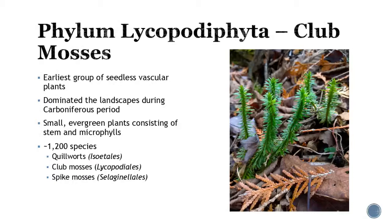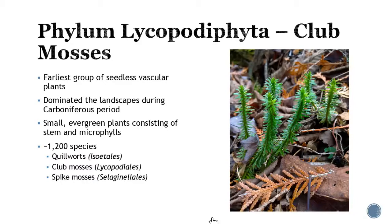Here are a few of the key phyla. Phylum Lycophyta, or the club mosses, are the earliest group of seedless vascular plants. They resemble mosses in a lot of their physiology and morphology. They really dominated landscapes early on, and they have a stem and what we call microphylls. There are about 12,000 species, broken up into the quillworts, club mosses, and spike mosses. The book doesn't go into too much detail about these.